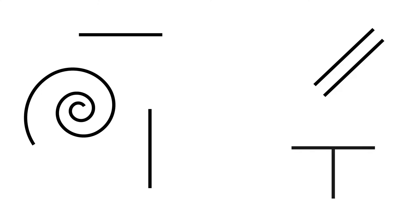Line can be horizontal, vertical, diagonal, parallel, spiral, perpendicular, or radial.